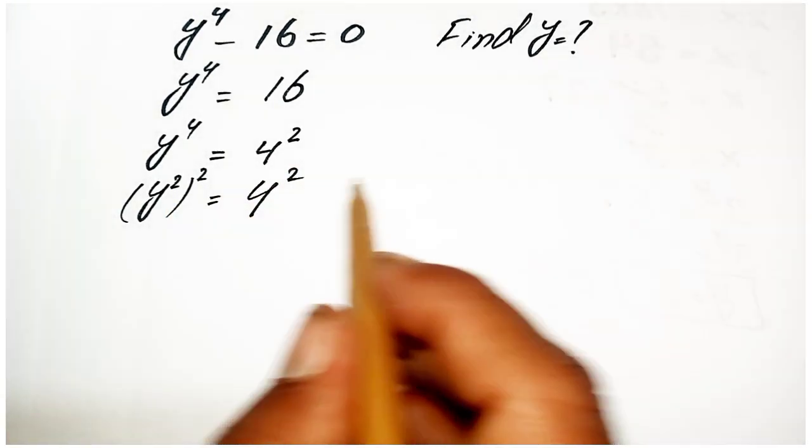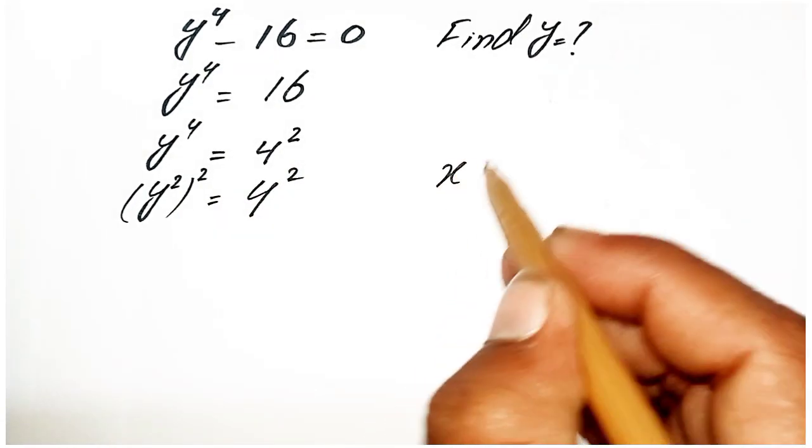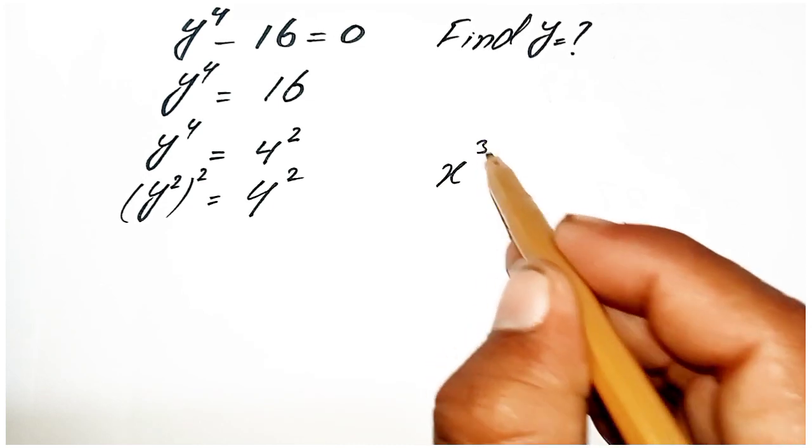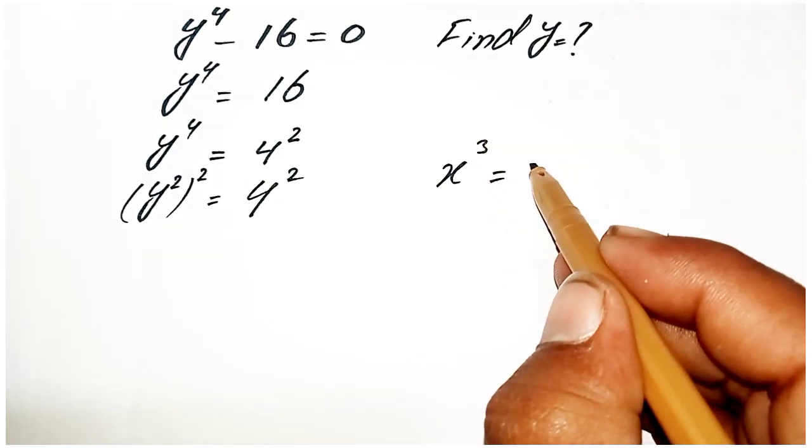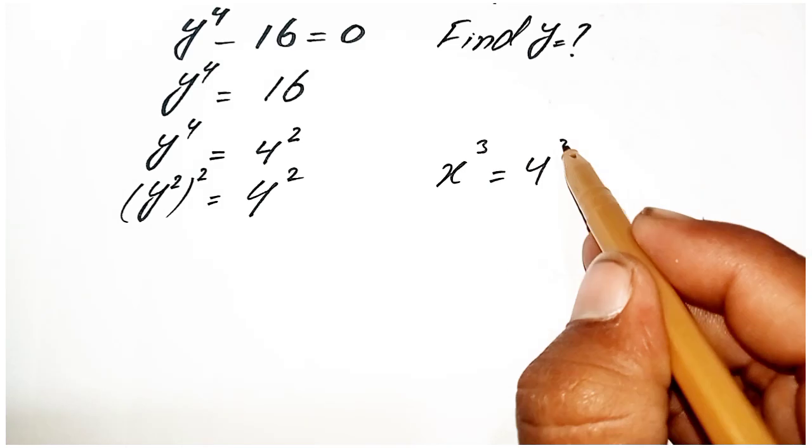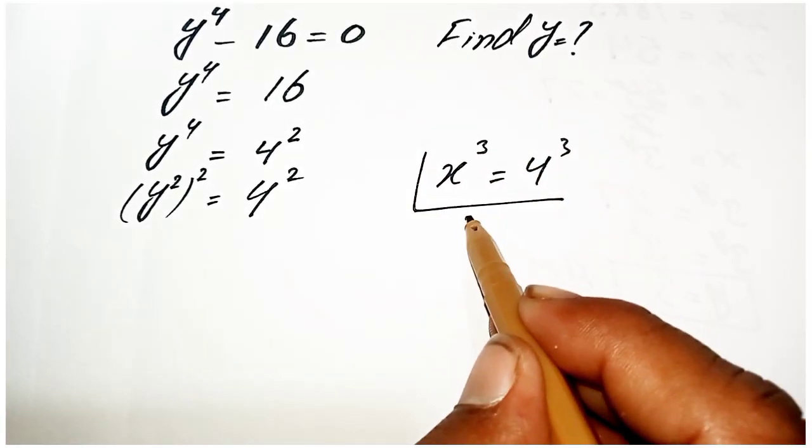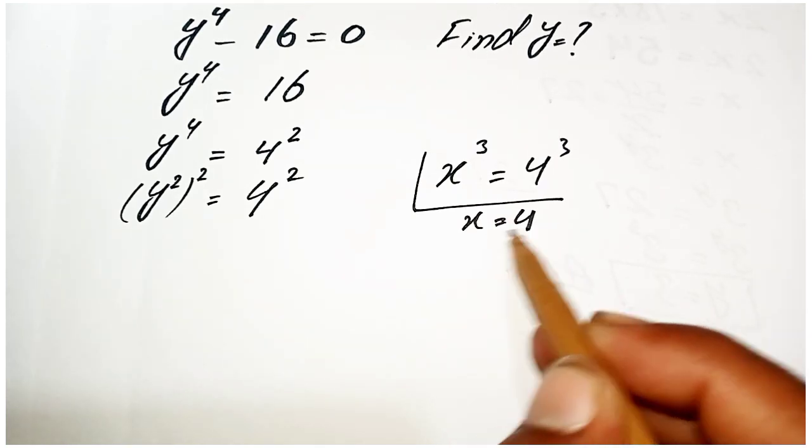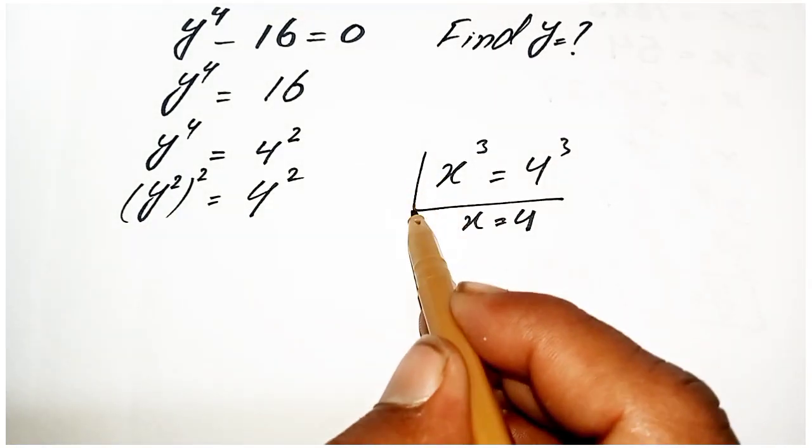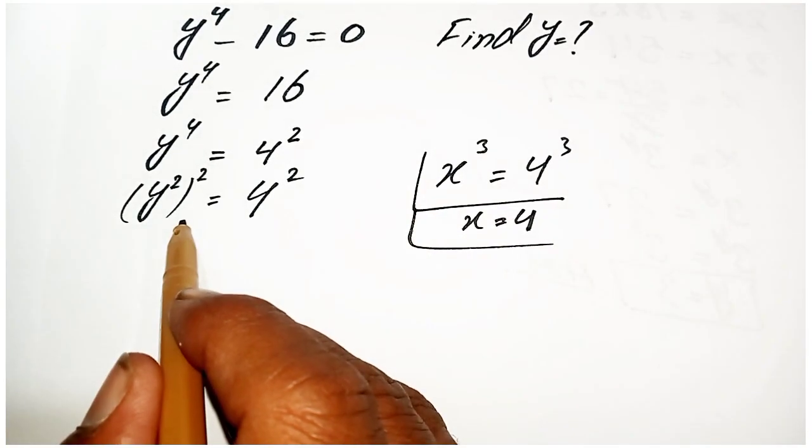We have a power rule: if x power 3 equals y power 3, and the power is the same, then the base is also the same. We can apply this power rule here.